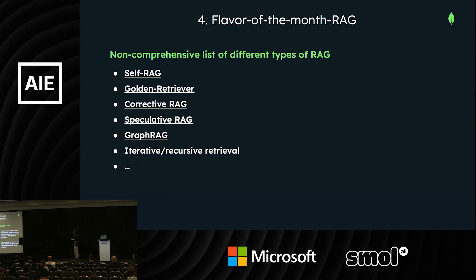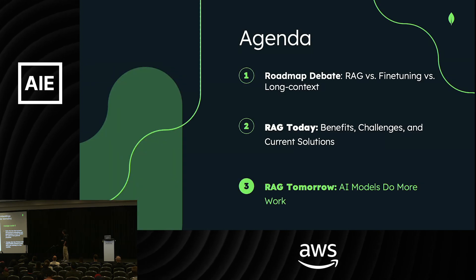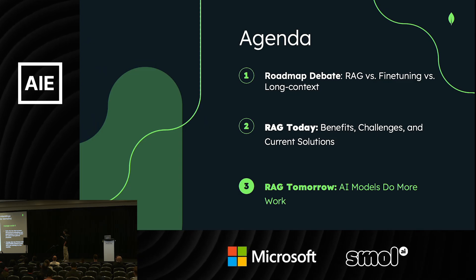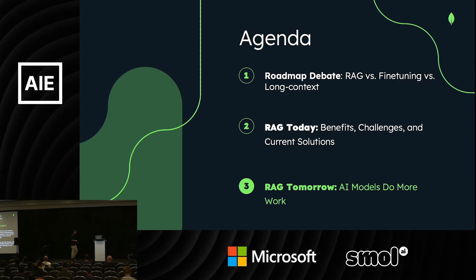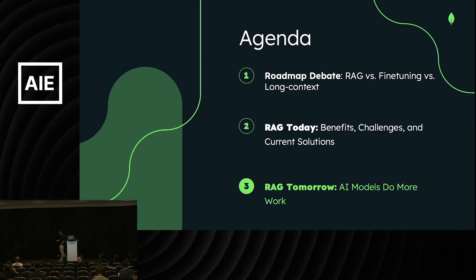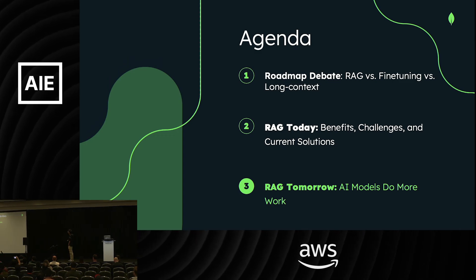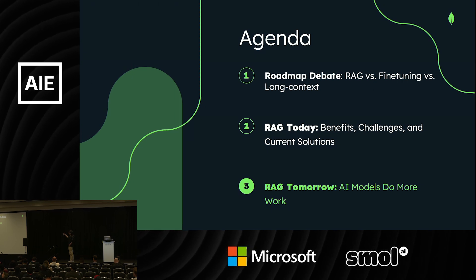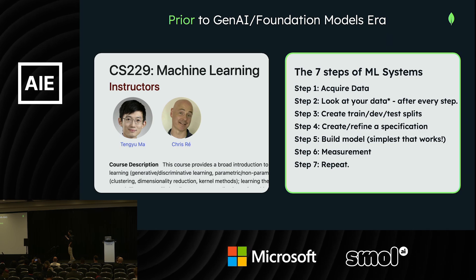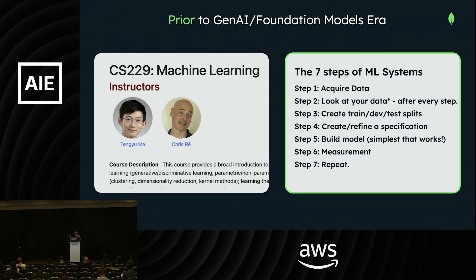Another technique is domain-specific embeddings, where you customize embeddings for certain domains. At MongoDB and Voyage, we customize for code, for example, and you get much better performance with a better trade-off in terms of storage cost and accuracy — you don't lose as much when you compress the vectors. Here we lose about 5% by compressing 100x, whereas before we might lose 10 to 15%. Fine-tuning embedding models with your own data is another option, and you can use additional retrieval approaches — such as graph-based retrieval, iterative retrieval — on top of the embeddings as an additional layer.